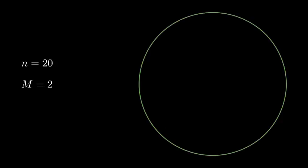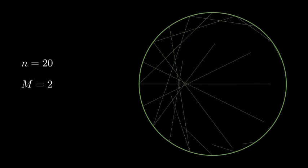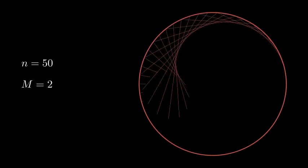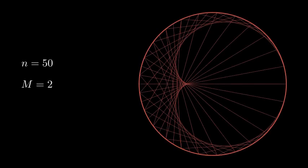To see why, let's draw a line between every value around our circle and the result that you get when multiplying that value by 2. In modulo 20, meaning the numbers around our circle go from 0 to 19, the pattern doesn't really look like anything. But if we increase the modulus, say, to 50, we start to see a beautiful curve emerge.